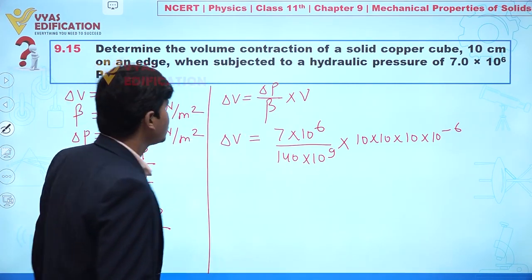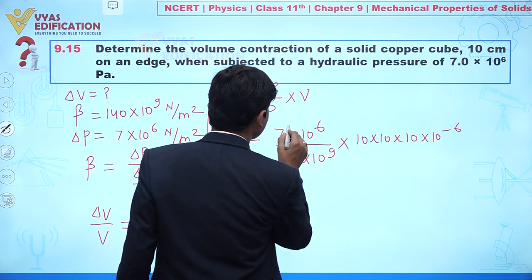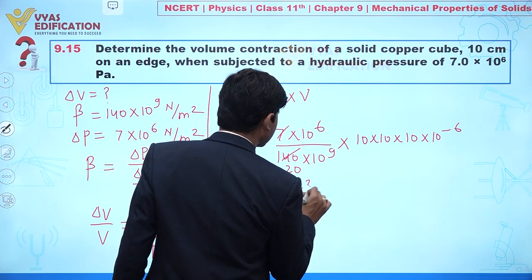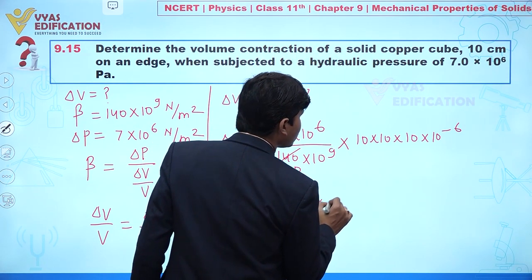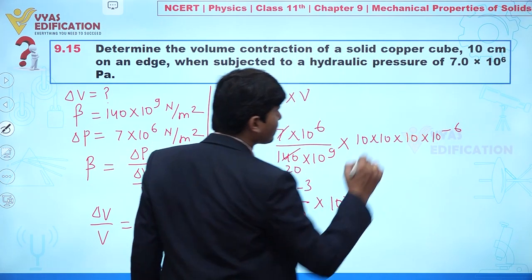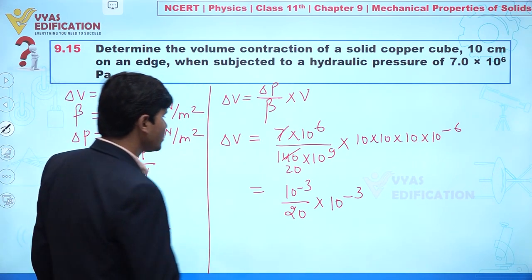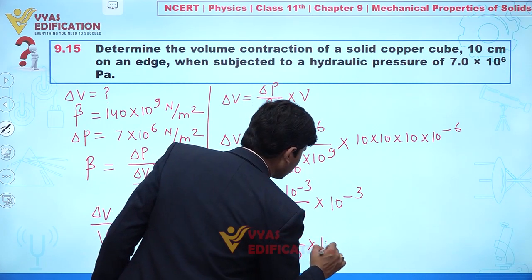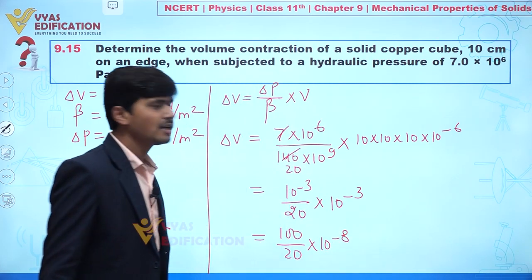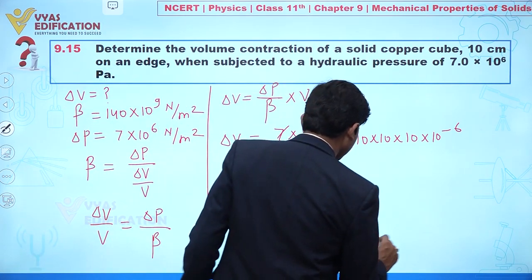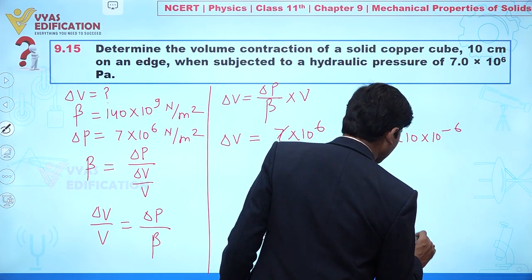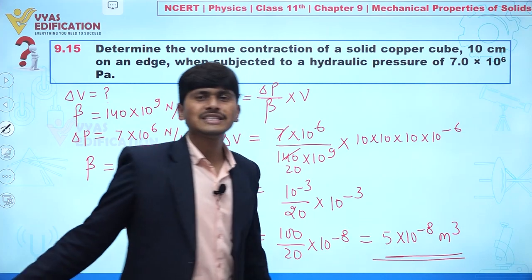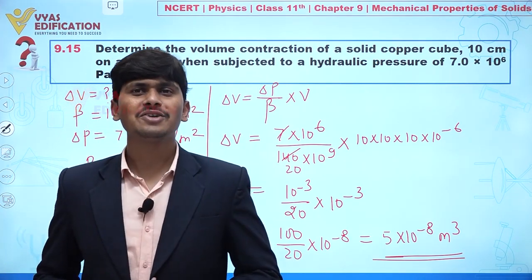Working through the arithmetic: the numerator gives 10⁻³ divided by 20 × 10³, simplifying to 100 divided by 20, times 10⁻⁸. Therefore, the change in volume is 5 × 10⁻⁸ meter cube. This is the final answer to this question.